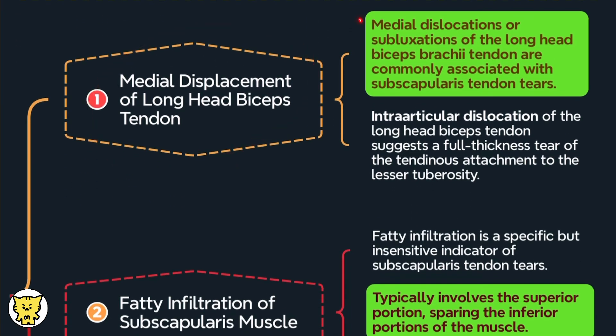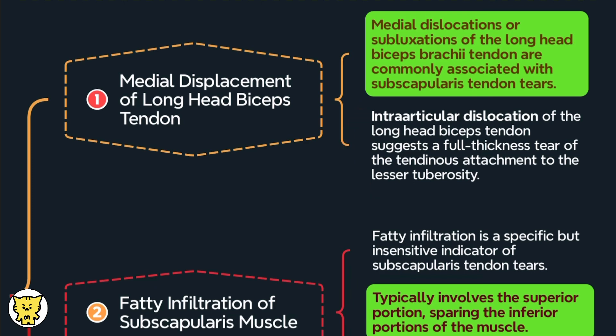Specifically, intraarticular dislocation of the biceps tendon strongly suggests a full thickness tear of the tendinous attachment to the lesser tuberosity.